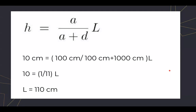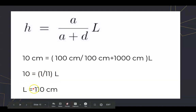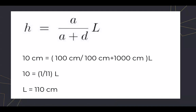Let's use some real numbers. Let's say I am looking through a window and I see an object that appears to be 10 centimeters tall, but I know in real life it is much bigger. I am standing a meter away from the window — so 100 centimeters — and the object is 10 meters away from the window. So we get 10 = (1/11) × L, which gives us L = 110 centimeters. So even though I saw the image as being 10 centimeters, the object in real life is actually 1 meter 10 centimeters.